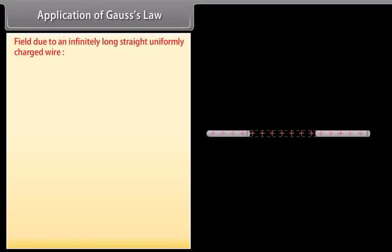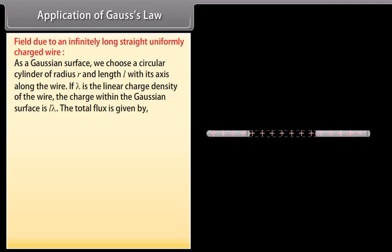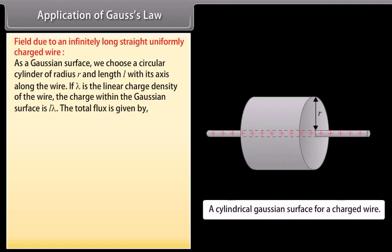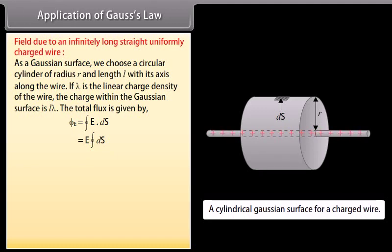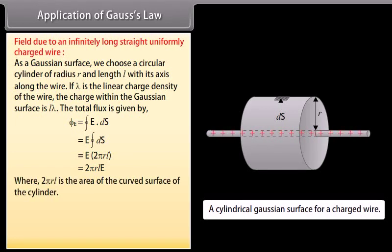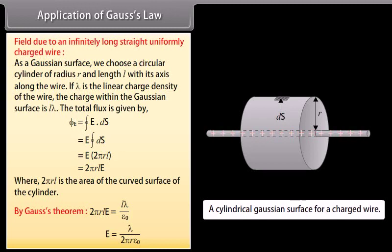Application of Gauss's law — field due to an infinitely long straight uniformly charged wire: as a Gaussian surface, we choose a circular cylinder of radius R and length L with its axis along the wire. If λ is the linear charge density of the wire, the charge within the Gaussian surface is Lλ. We know that ΦE = ∮E·dS = E × 2πRL, where 2πRL is the area of the curved surface of the cylinder. According to Gauss's theorem, the electric field at any point at a radial distance R from the wire equals λ / (2πRε₀).